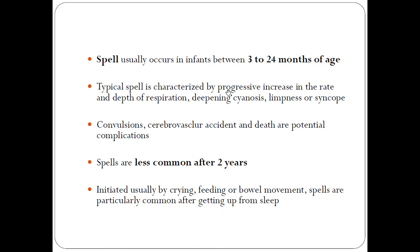A typical spell is characterized by a progressive increase in rate and depth of inspiration. The child will start breathing faster and deeper, and cyanosis — the bluish discoloration of the face, peripheries, lips, and central parts — will increase. If the spell continues for a long time, it may lead to hypoxia, hypoxia-related convulsions, cerebrovascular accident, and even death.